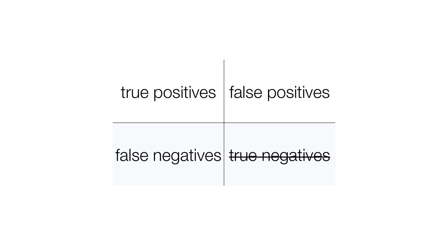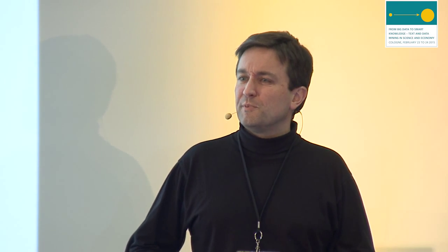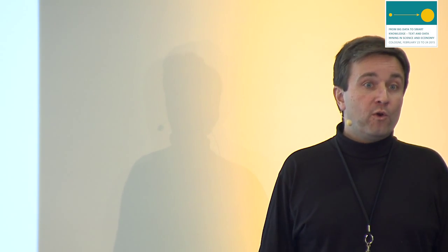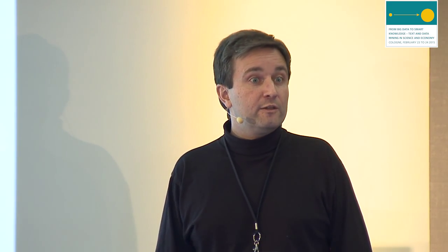Then you do the counting exercise: you count the true positives — the things they agree on — the false positives — things tagged by the computer that according to the human shouldn't be — and the false negatives — things tagged by the human that the computer failed to tag. True negatives are very difficult to define in text mining because matches can have variable lengths. Based on those three numbers, you calculate quality metrics like precision — how much of what you tag is correct — and recall — how much of the stuff you should tag did you manage to tag. You combine that into an F-score, rank your methods, and say: congratulations, you are 2% better than what people managed to do five years ago — which I personally find one of the most boring things you can do in this world.